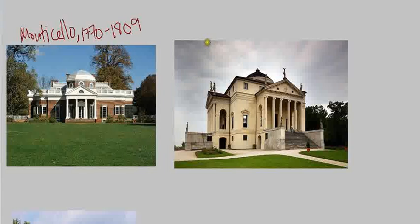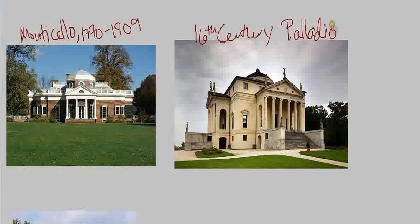I have Monticello here next to this image from the 16th century in Italy, by a figure you should remember: Palladio. You might remember Palladio with regards to the English architect Inigo Jones, whom we discussed. Inigo Jones was very influenced by the work of the Italian Palladio, and so was Thomas Jefferson. This building is a villa in Italy, and you can see there are a lot of similarities between these two buildings — that traditional classical temple front with columns across the front and a triangular pediment.